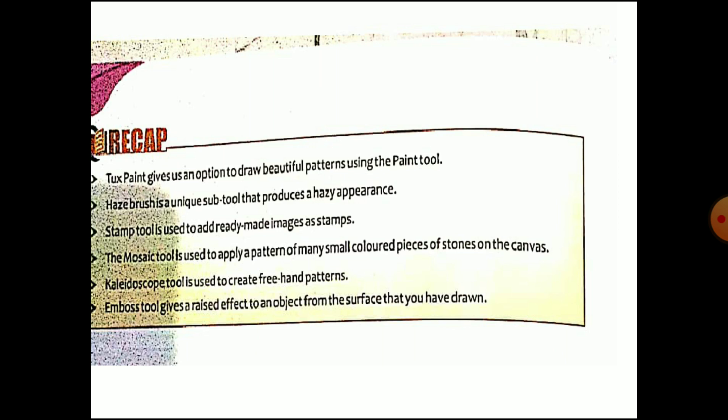The magic tool — specifically the mosaic tool — is used to apply a pattern of many small colored pieces of stones on the canvas, like colored stone pieces. The kaleidoscope is a tool used to create freehand patterns in four directions. The emboss tool gives a raised effect to an object from the surface that you have drawn.